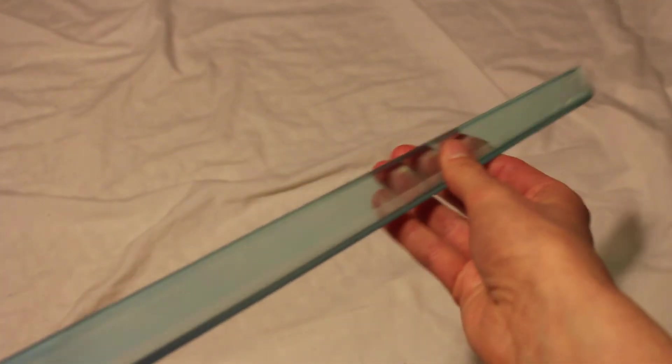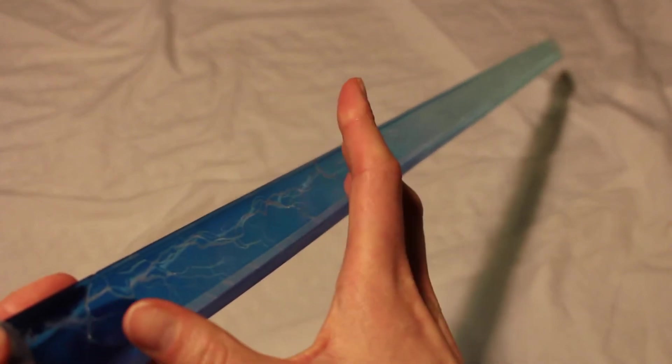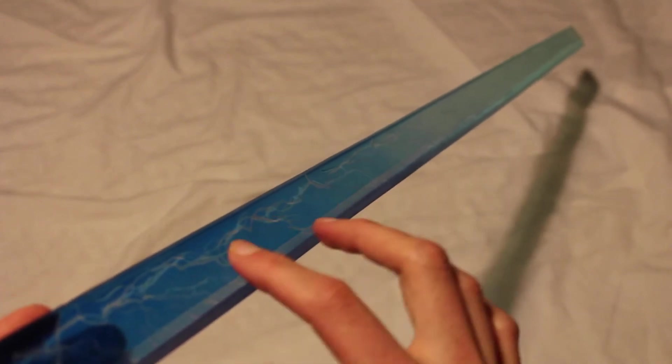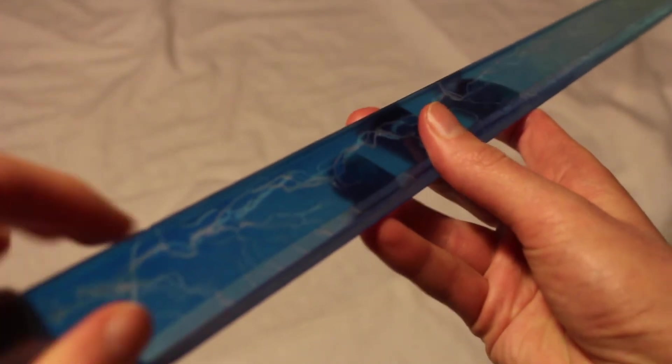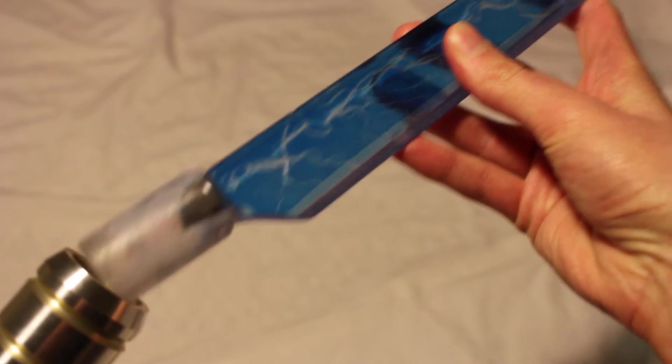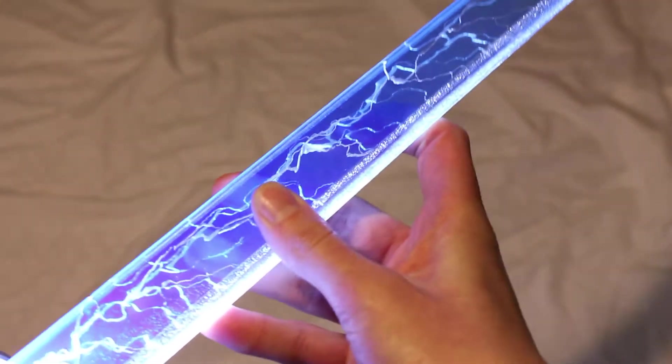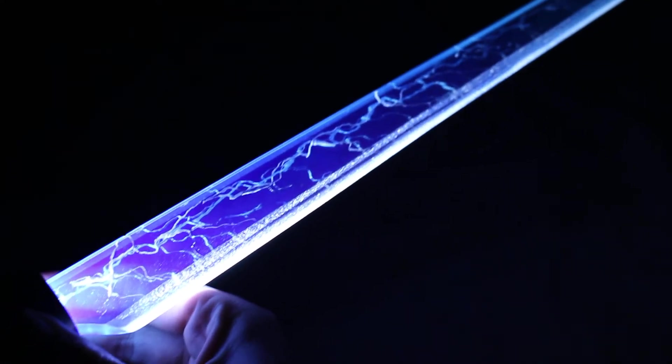So this is kind of the main thing you should know. Here's what the blade looks like just without the light source. You can see the darker blue here, lighter blue up here, and some of the details, although looks a lot better when it's lit up. I'll turn off the light, see if we can get a better view.